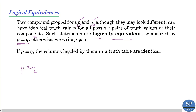If P is not logically equivalent to Q, then we write P not logically equivalent to Q. So two compound propositions are logically equivalent when their components have identical truth values for every possible combination. About P logically equivalent to Q — the columns headed by them in a truth table are identical.